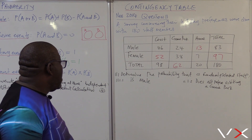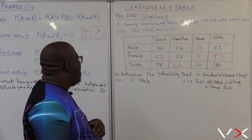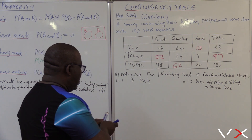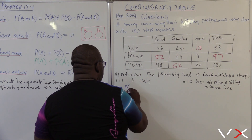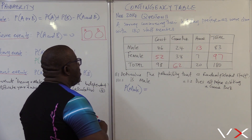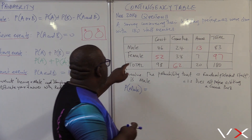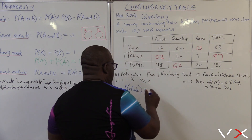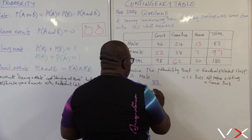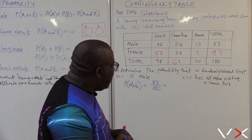We want to check the probability of a male. Determine the probability that a randomly selected staff member is a male — so we're just looking for the probability of a male. Using M for male, it equals — remember the definition of probability — how many males do we have? 83. So it's 83 over the super total, which is 180. You can write this in decimal form: 83 over 180 gives us 0.46.